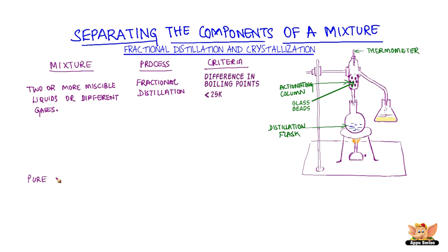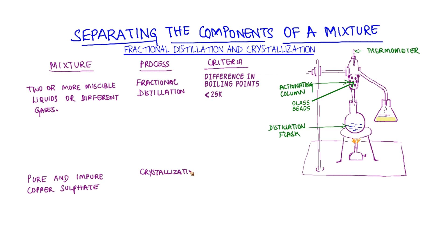Let's see how we can obtain pure copper sulphate from an impure sample. We use crystallization for this. Crystallization is a method used to purify solids.